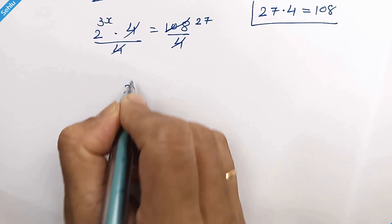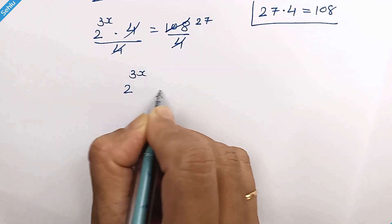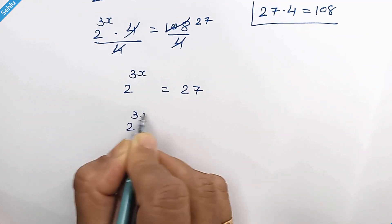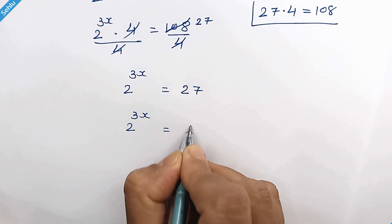So we have 2 to the power 3x is equal to 27. 27 is 3 cube.